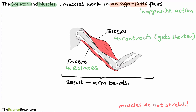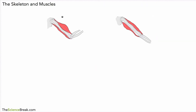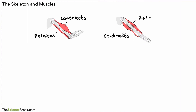Muscles for movement often work in pairs, working in the opposite way to each other — one contracts and the other relaxes to allow movement. In the first example, the biceps contracts and the triceps relaxes, causing the arm to bend. In the second picture, the triceps contracts and the biceps relaxes — the opposite — and the arm straightens. That's antagonistic.